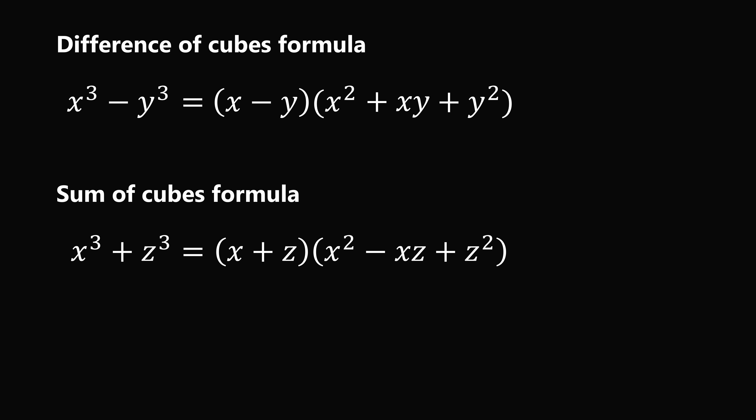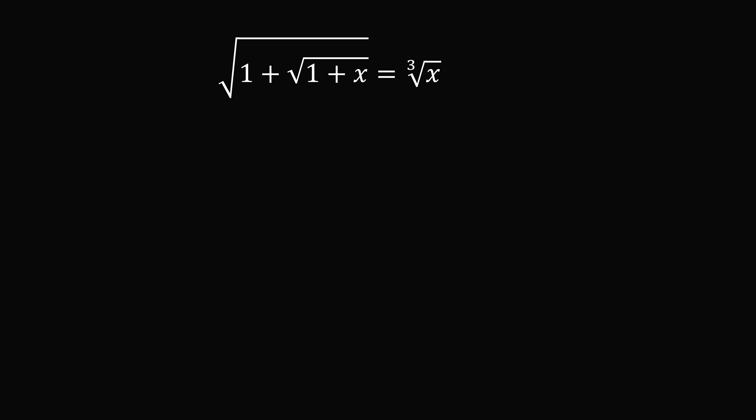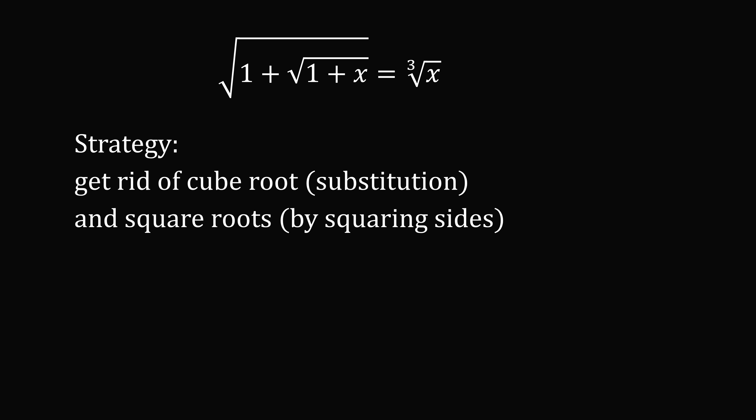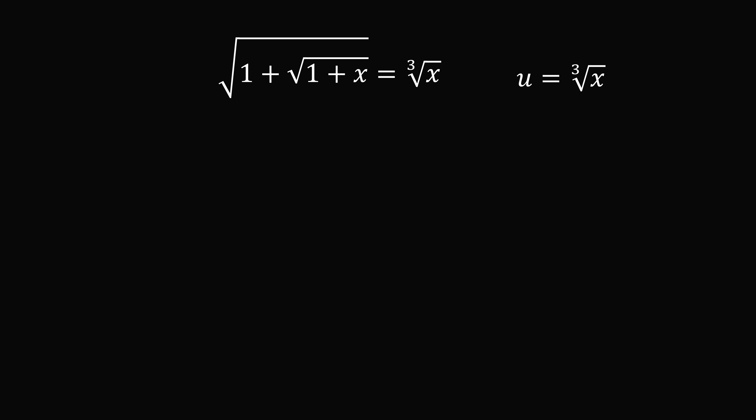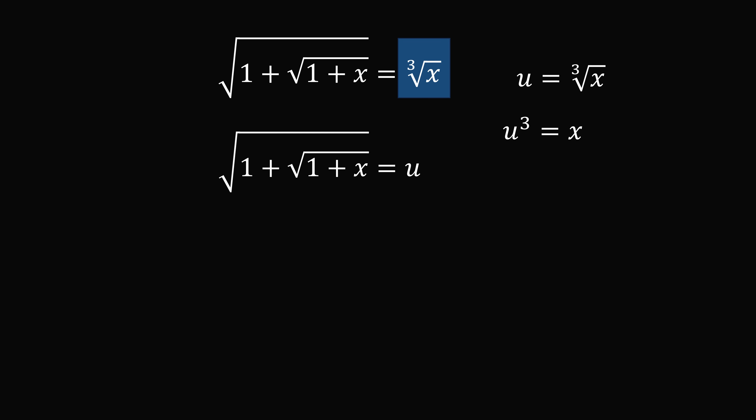Now we have the sum of cubes formula: x cubed plus z cubed equals (x plus z)(x squared minus xz plus z squared). So let's solve the original problem. We have a nested square root on the left and a cube root on the right. We'll adopt two strategies: first get rid of the cube root by substitution, then get rid of the square roots by squaring both sides. We let u equal the cube root of x, so u cubed equals x.